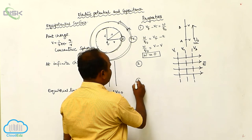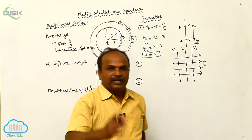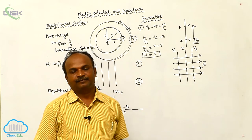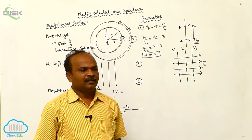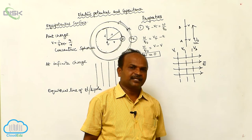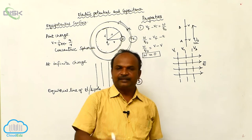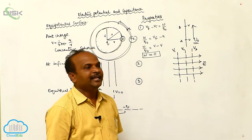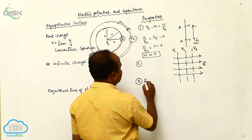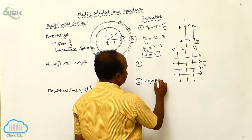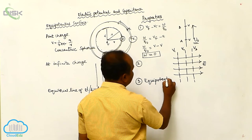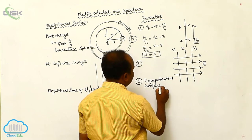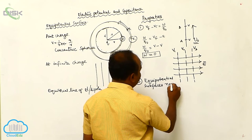Property 3: Equipotential surfaces never intersect. Just as electric lines of force never intersect each other, similarly, equipotential surfaces never intersect.